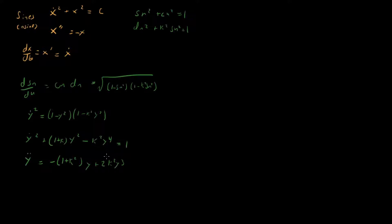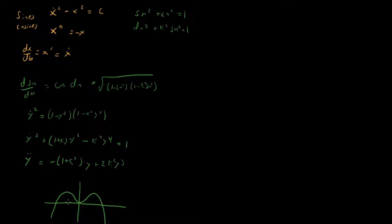I want to say something about the intuition here. Looking at the potential energy terms, we have a positive contribution on y² and a negative contribution on y⁴. This tells us that sn satisfies a differential equation corresponding to a mechanics problem where the potential looks like a bowl in the center — for large values the potential drops off, but near the origin there's a positive y² term giving a local minimum.